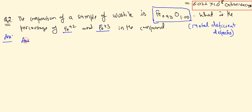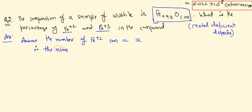We assume the number of Fe²⁺ ions = x. Therefore the number of Fe³⁺ ions = 0.93 − x, since total Fe = 0.93, some are 2+ and the rest are 3+. If Fe²⁺ = x, then Fe³⁺ = 0.93 − x.